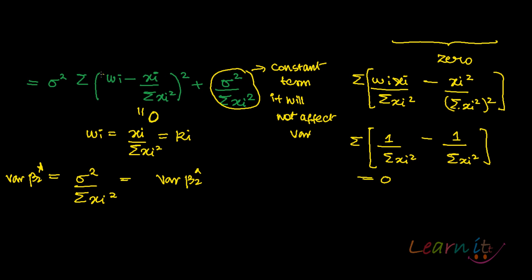In case of the first term in this expression, that is this term, that is WI minus XI upon summation of XI squared is not equal to 0,